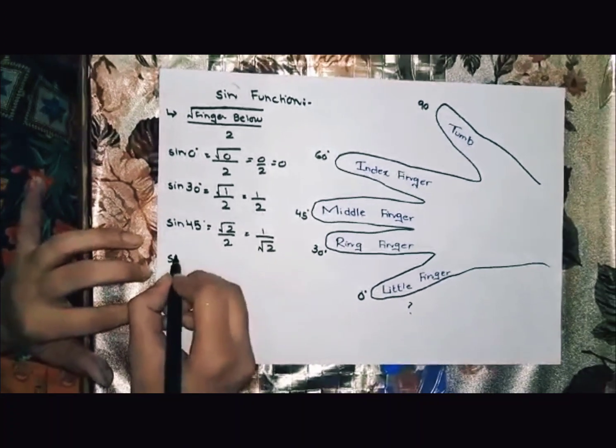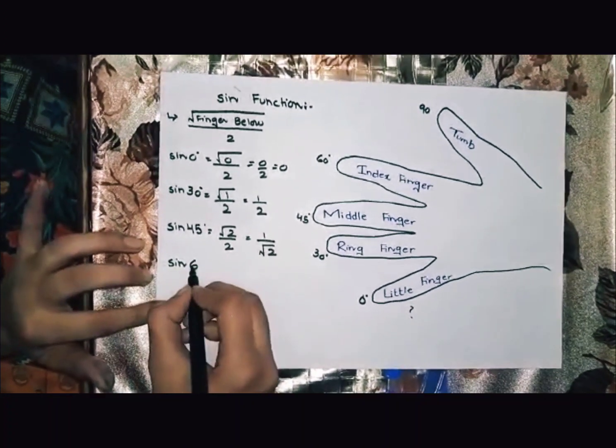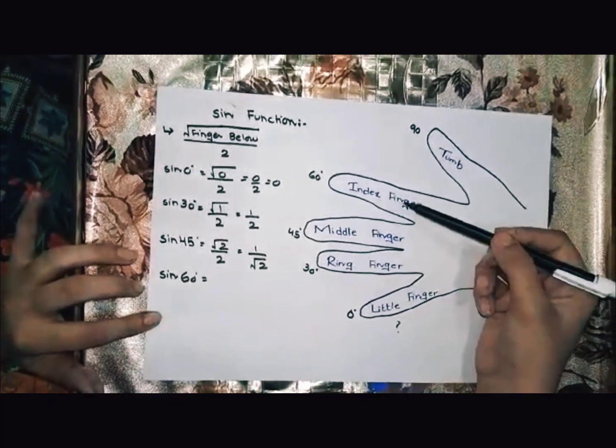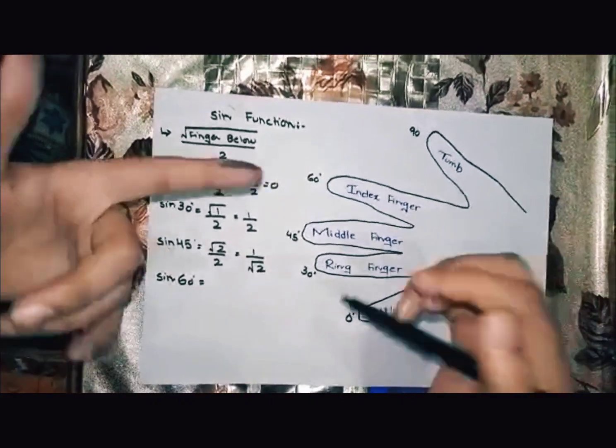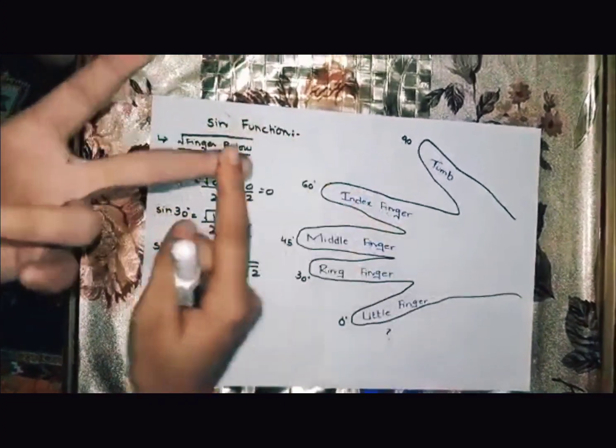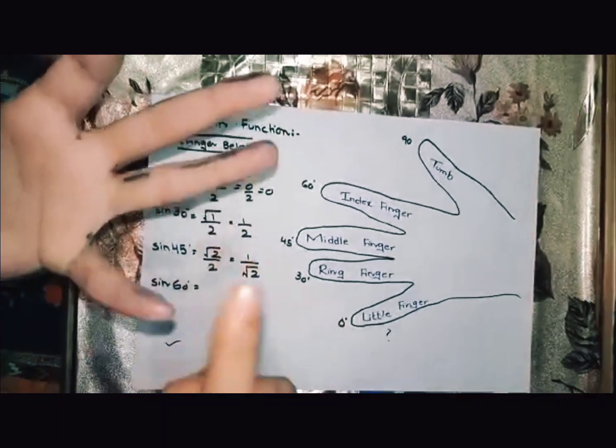Next we find sine 60. For sine 60, we have index finger. Below we have middle finger, ring finger, and little finger. Under root 3 divided by 2.